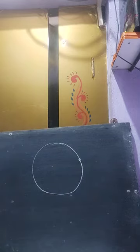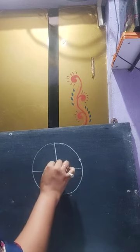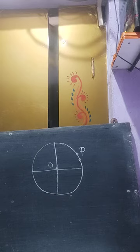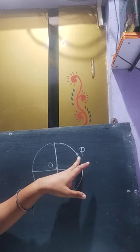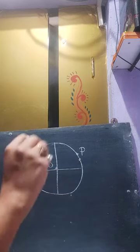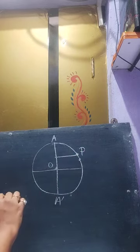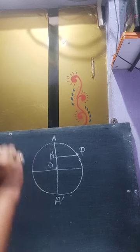Suppose a particle P is moving with uniform speed along the circumference of a circle. This is basically the center of the circle O, and the particle P is here. When the particle is at point P, the foot of the perpendicular drawn from the particle on the diameter AA' is the point N, and PN is this perpendicular.